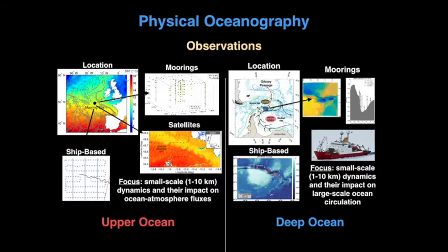How do we make these observations? On the left, I'm illustrating measurements of the upper ocean, and we can make observations using moorings, satellites, and ships. On the right, satellites can't penetrate the ocean surface, so we have to rely primarily upon ships and mooring-based measurements to examine the deep ocean. So the deep ocean is quite a challenge to measure.